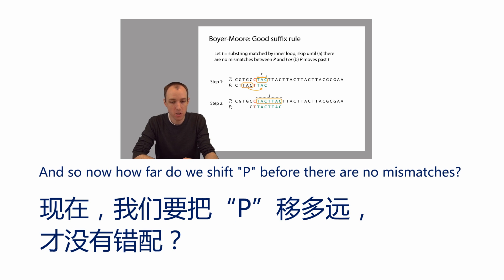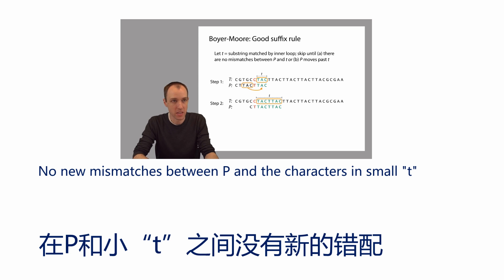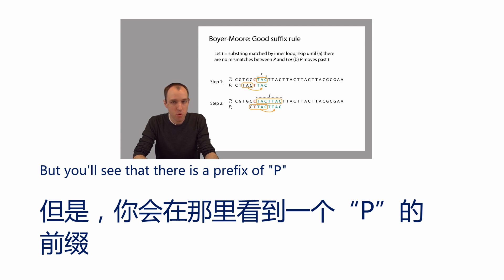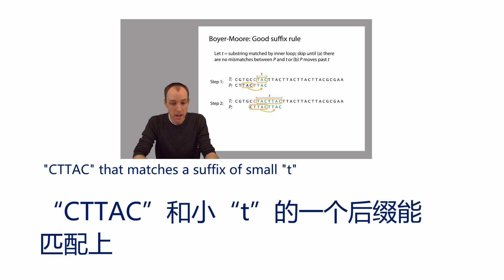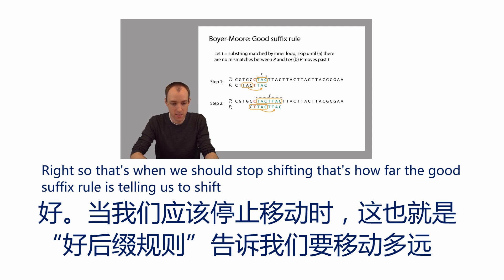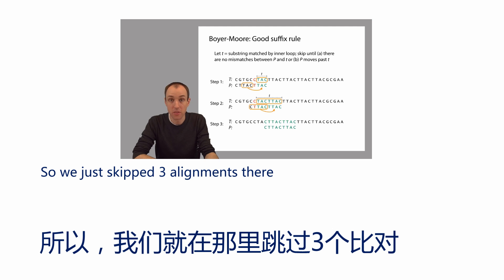Now how far do we shift P before there are no new mismatches between P and the characters in small t? This one's a little harder to see at first, but you'll see that there is a prefix of P — C-T-T-A-C — that matches a suffix of small t. So C-T-T-A-C right here matches C-T-T-A-C right here. That's when we should stop shifting — that's how far the good suffix rule is telling us to shift. We just skipped three alignments there.